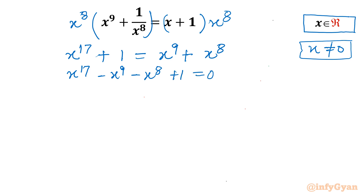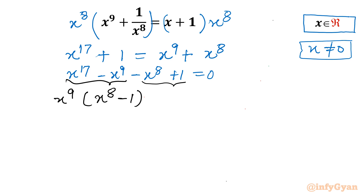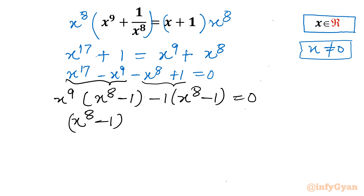Take all terms to one side: x^17 - x^9 - x^8 + 1 = 0. From the first two terms, x^9 is common, so factor out x^9 to get x^9(x^8 - 1). From the last two terms, take -1 common, giving -1(x^8 - 1), so the same bracket x^8 - 1 appears. Taking (x^8 - 1) common leaves (x^9 - 1) inside the bracket.